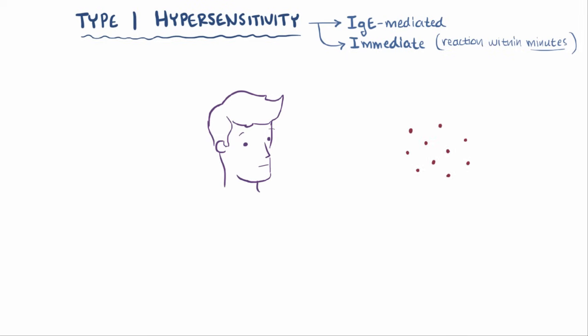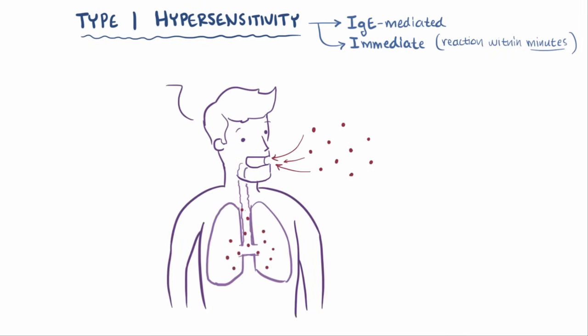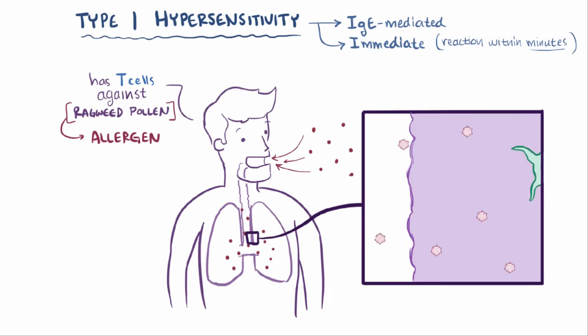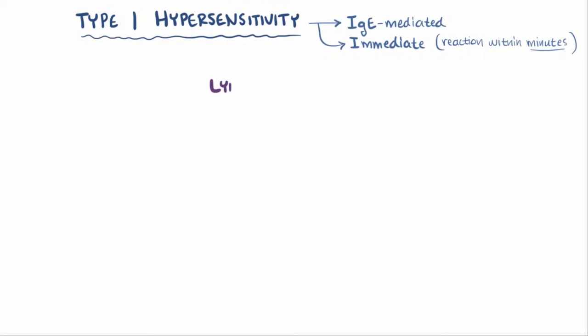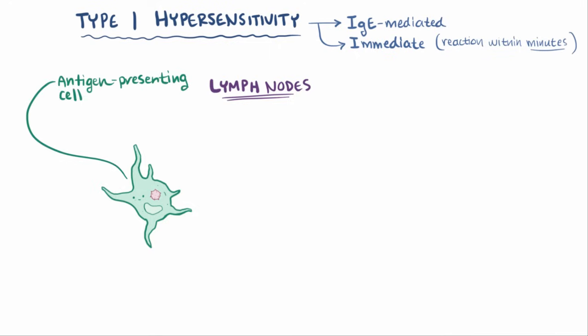So, let's say this person breathes in some ragweed pollen. That person happens to have T helper cells that can bind to a specific molecule on the pollen, making that molecule an allergen. First off, that allergen gets picked up by immune cells hanging out in the membranes along the airways, which then grab the molecule and migrate to the lymph nodes, which happens regardless of if the person is allergic or not. These cells are antigen-presenting cells, since they carry the antigen to the lymph nodes and present it to the T helper cells living there. Dendritic cells and macrophages are examples of antigen-presenting cells.